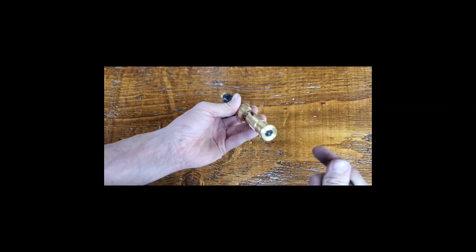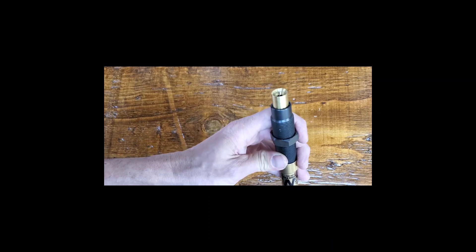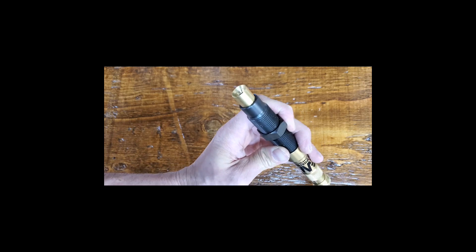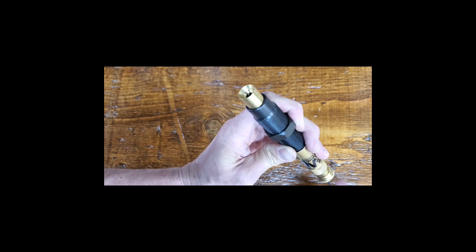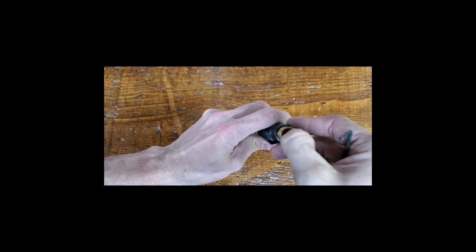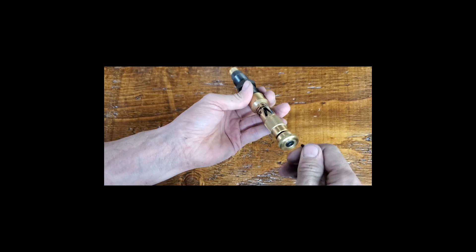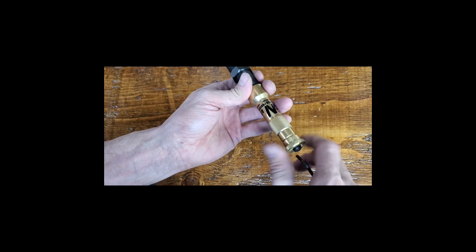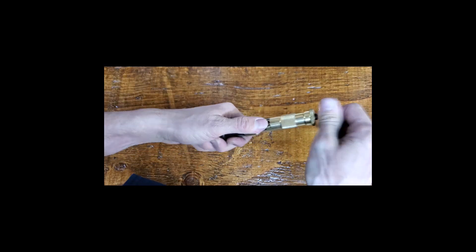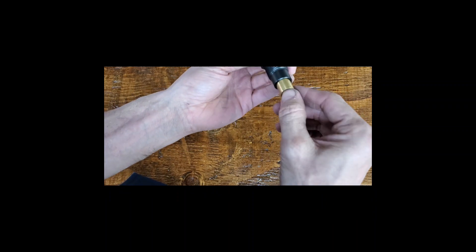Let me grab an allen wrench and we'll adjust that. So it is a 3/32 allen wrench. We're going to adjust that. I think I'll zoom in on that. We're just going to turn that until it's recessed. Right there is perfect.